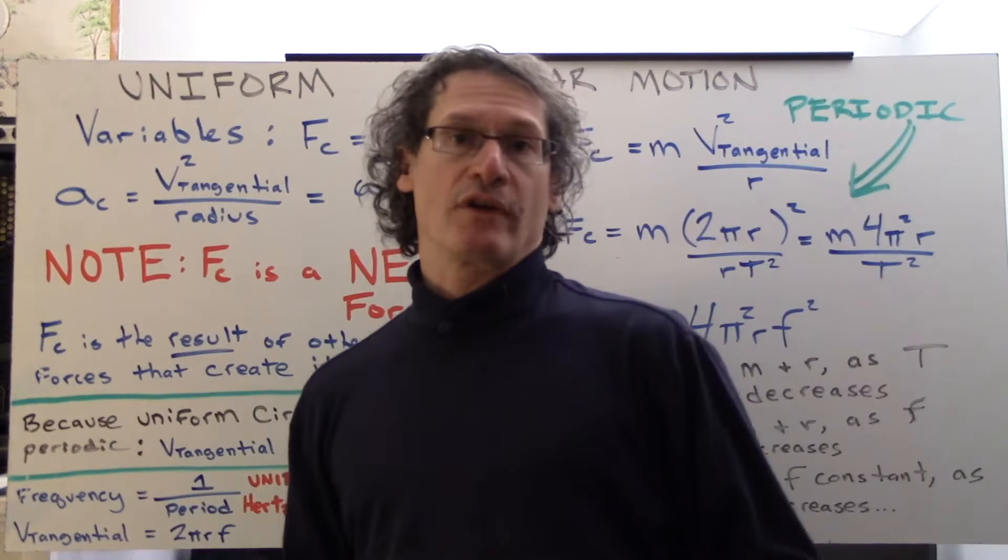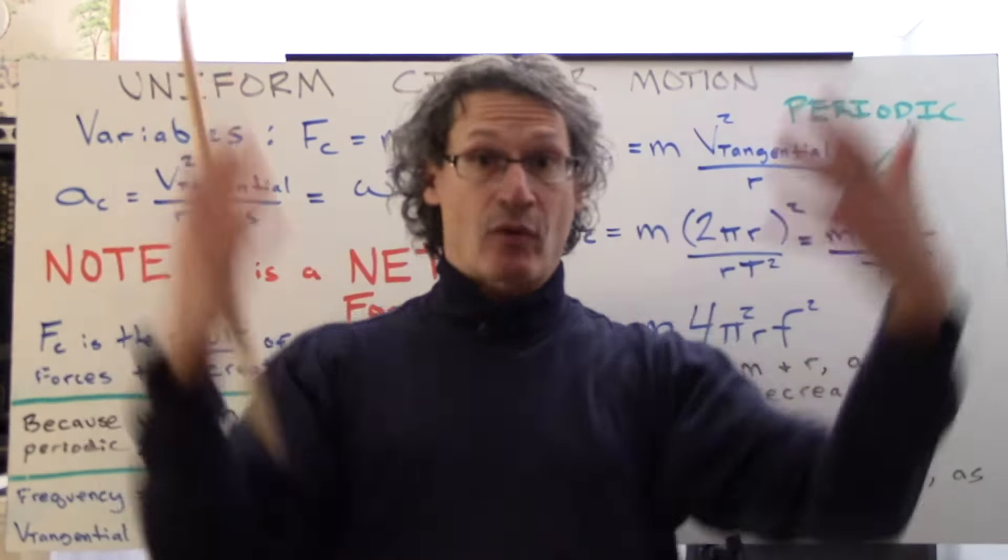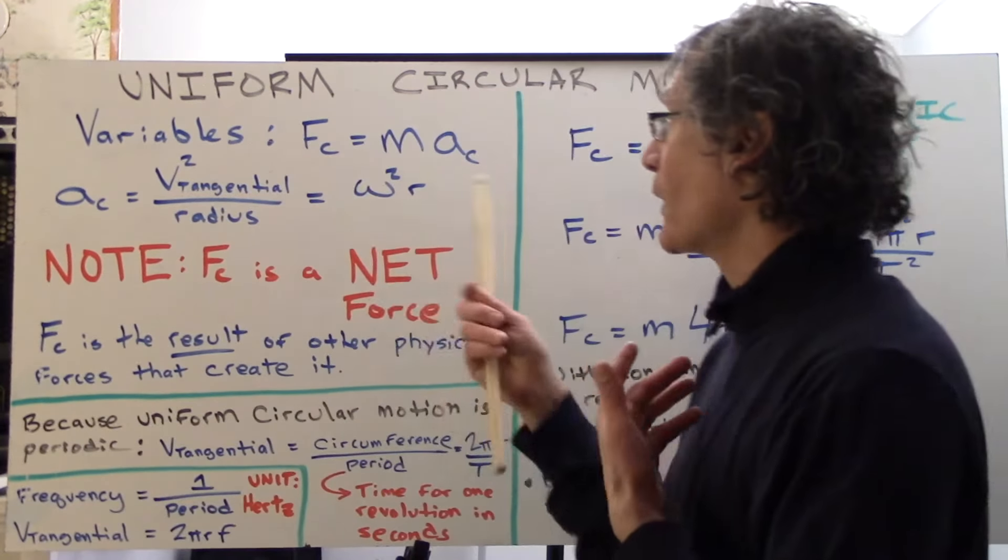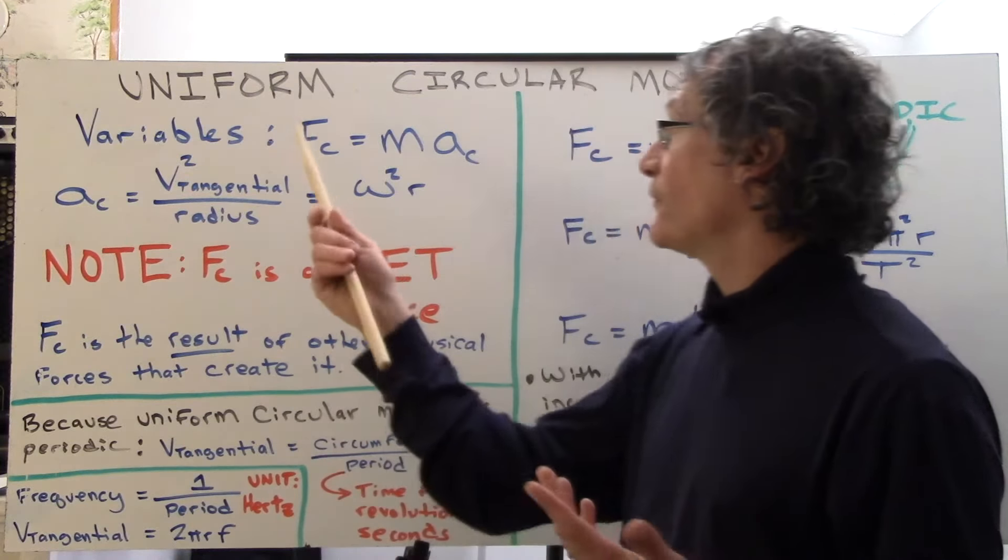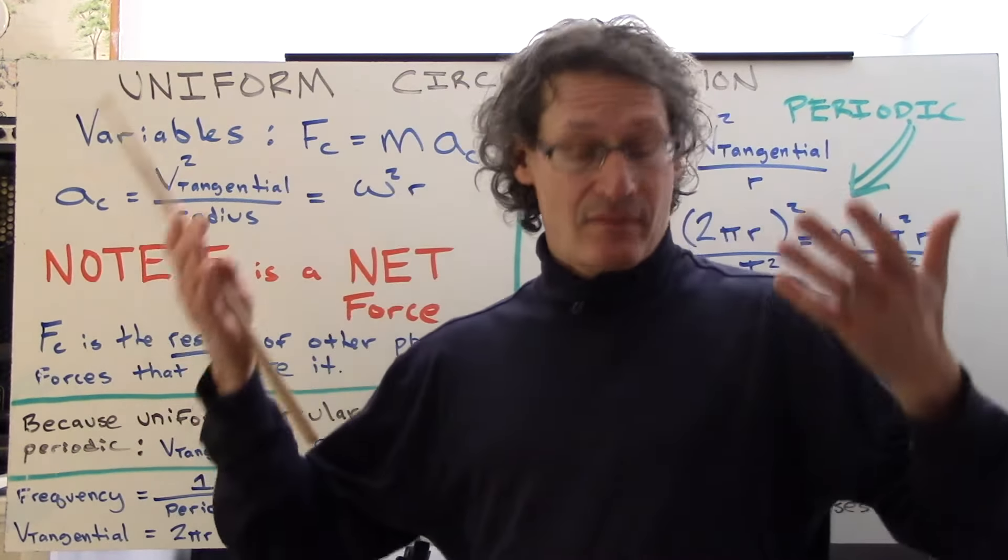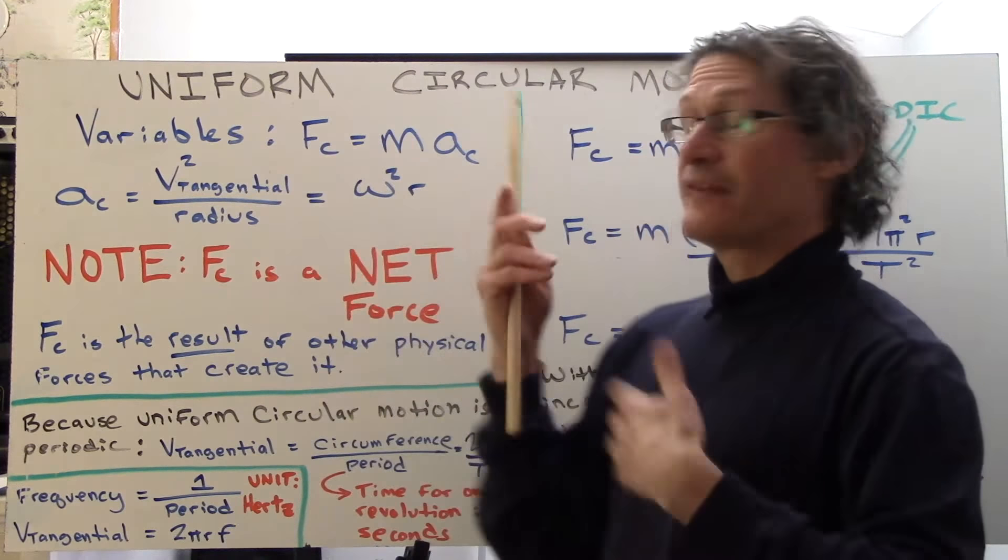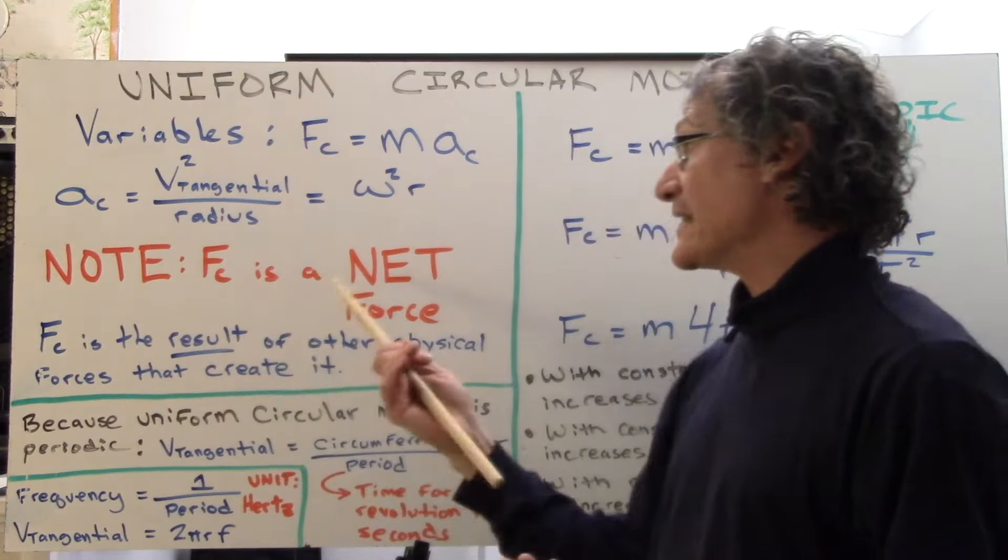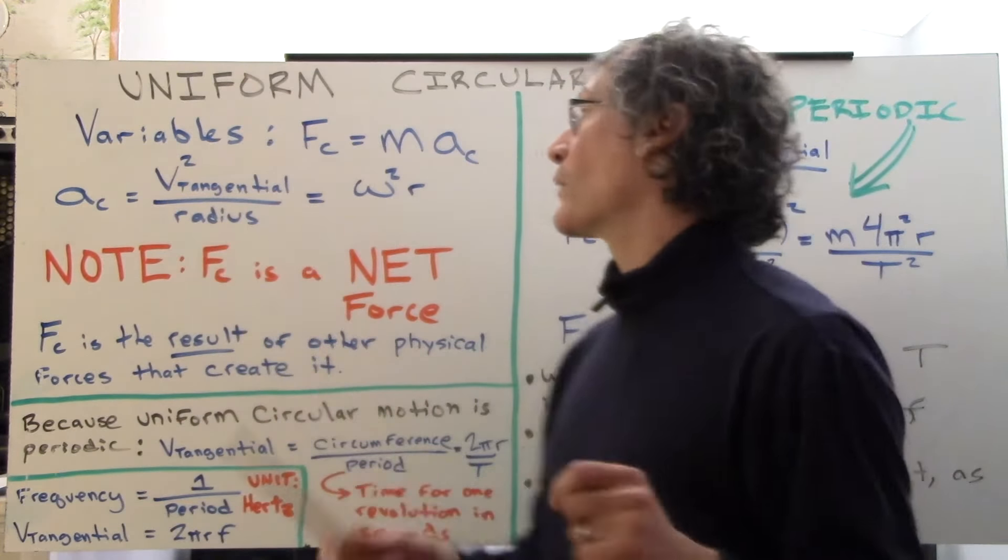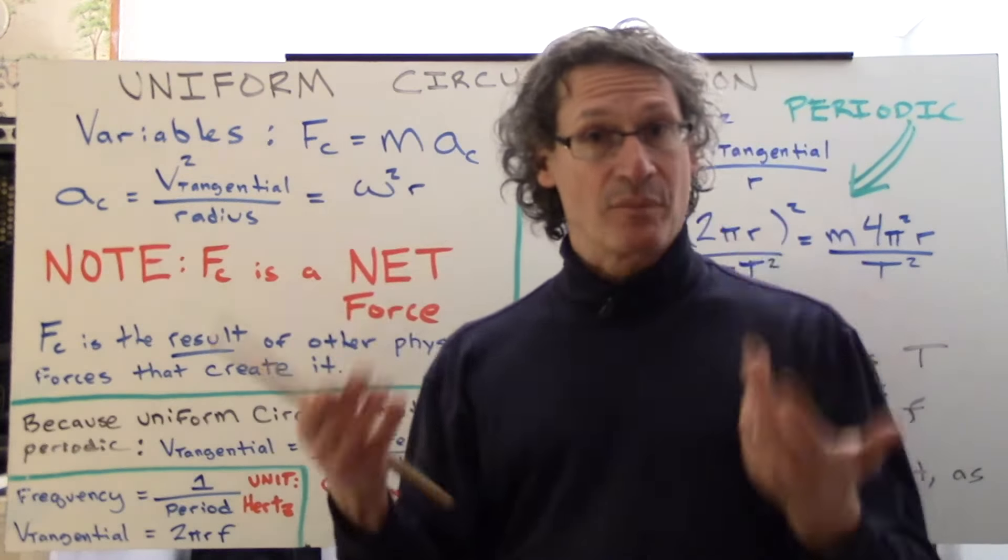Yo, peeps, so let's take a look at some of the variables involved in this thing called uniform circular motion. Well, first of all, to get force centripetal, we recognize that it takes the format of F net equals ma. In fact, centripetal force is a net force, so that kind of works. Mass times centripetal acceleration will give us centripetal force.